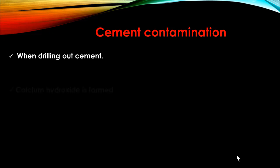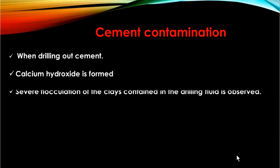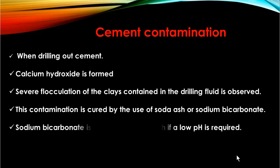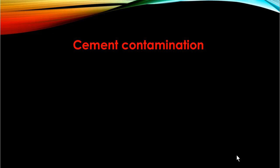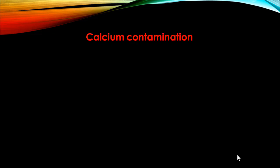Cement contamination enters the drilling fluid when drilling out cement. Calcium hydroxide is formed due to the cement contamination, and severe flocculation of the clay contained in the drilling fluid is observed. The contamination is cured by use of soda ash or sodium bicarbonate. Sodium bicarbonate is preferred over soda ash if no pH increase is required. For drilling out a hard cement plug or shoe track, a pre-treatment of five to six sacks of sodium bicarbonate should be used. If green or very soft cement has to be drilled out, the contamination may be too severe to cure and the contaminated drilling fluid should be discarded at surface.